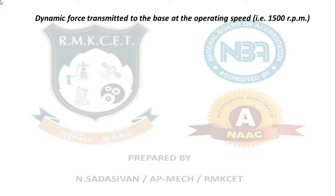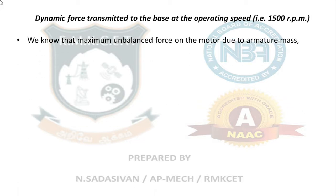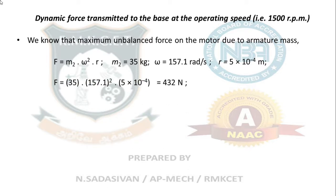Now, next question: dynamic force transmitted to the base at the operating speed 1500 rpm. We know that maximum unbalanced force on the motor due to armature is the centrifugal force m omega square r. Now this is your armature mass, that is your rotating part of the motor. So 35 kg multiplied by 157.1 radians squared multiplied by 0.5 millimeter eccentricity. Put all the things in meters: 35 kg, 157.1 radians, 5 × 10^-4 meter. Find the centrifugal force value: 432 Newton is the force exerted.